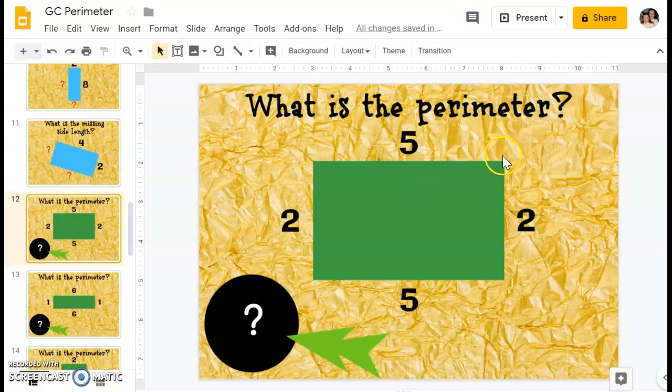Now remember to find the perimeter, you have to add up all of the sides, and then tell me what the perimeter is here in the question mark over here. So I have 5, 2, 5, and 2. Now I always start at the top of my shape to make sure I don't keep counting what I've already counted.